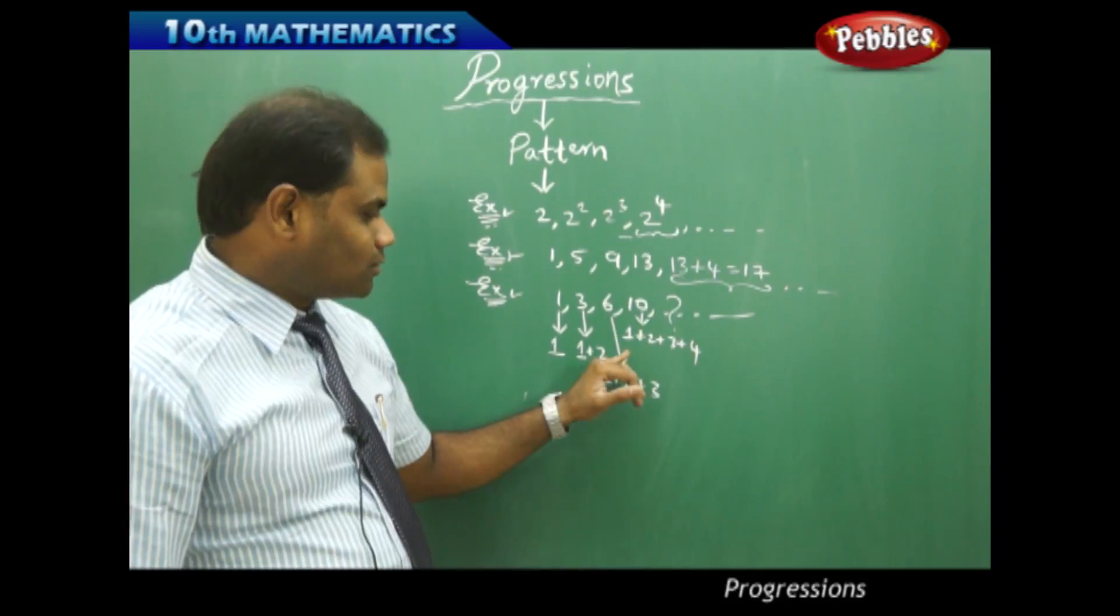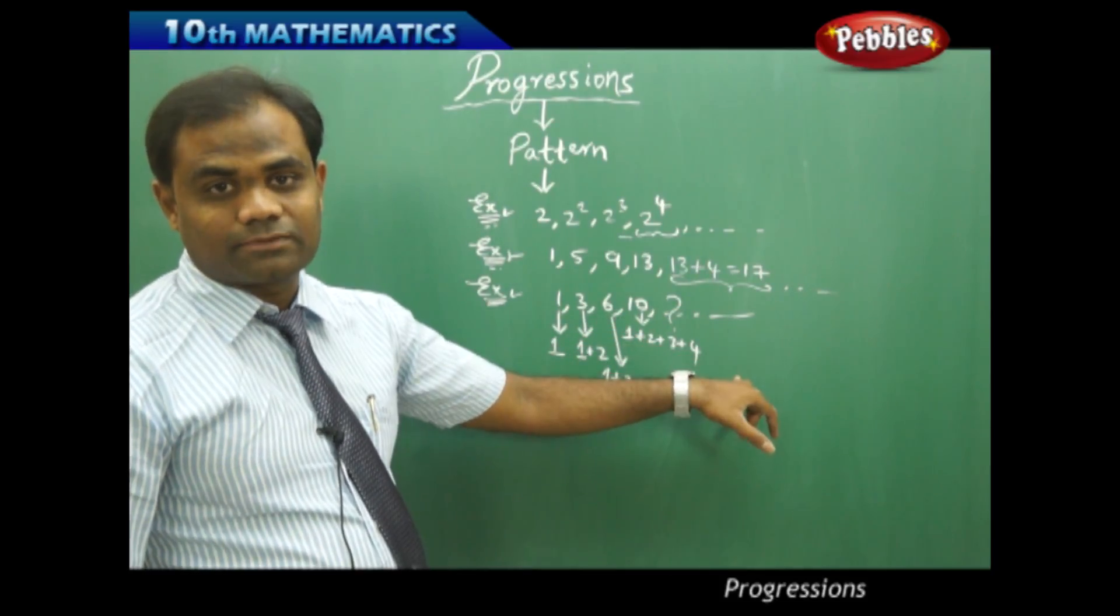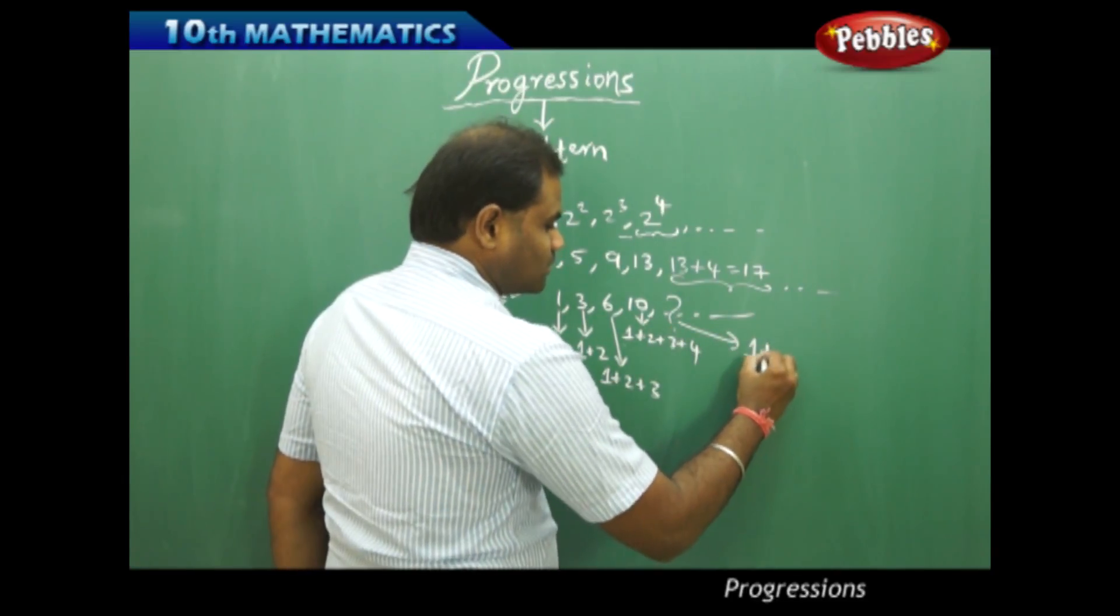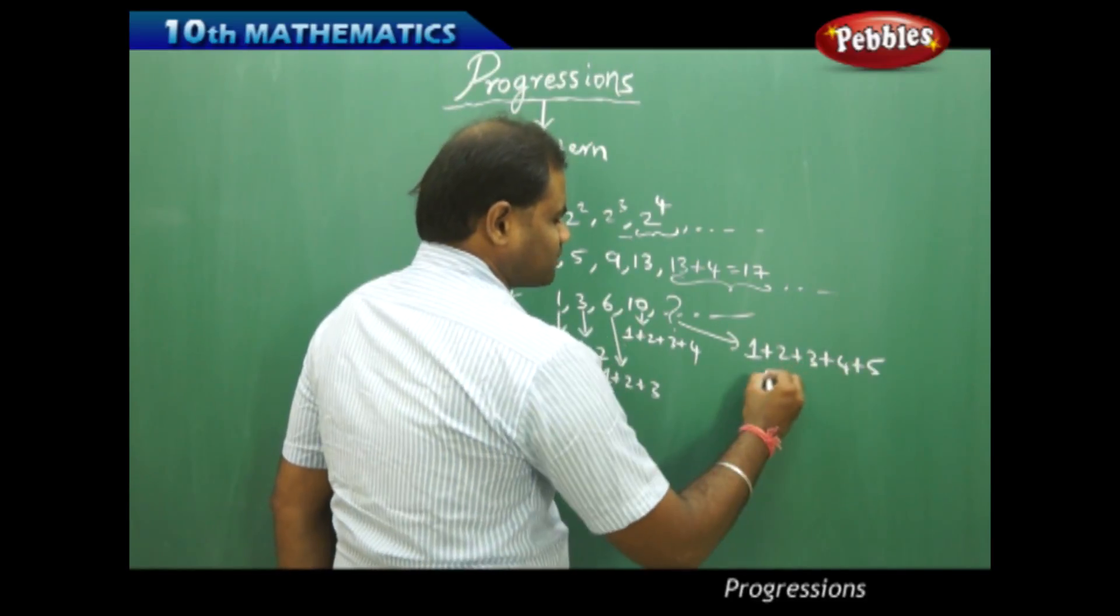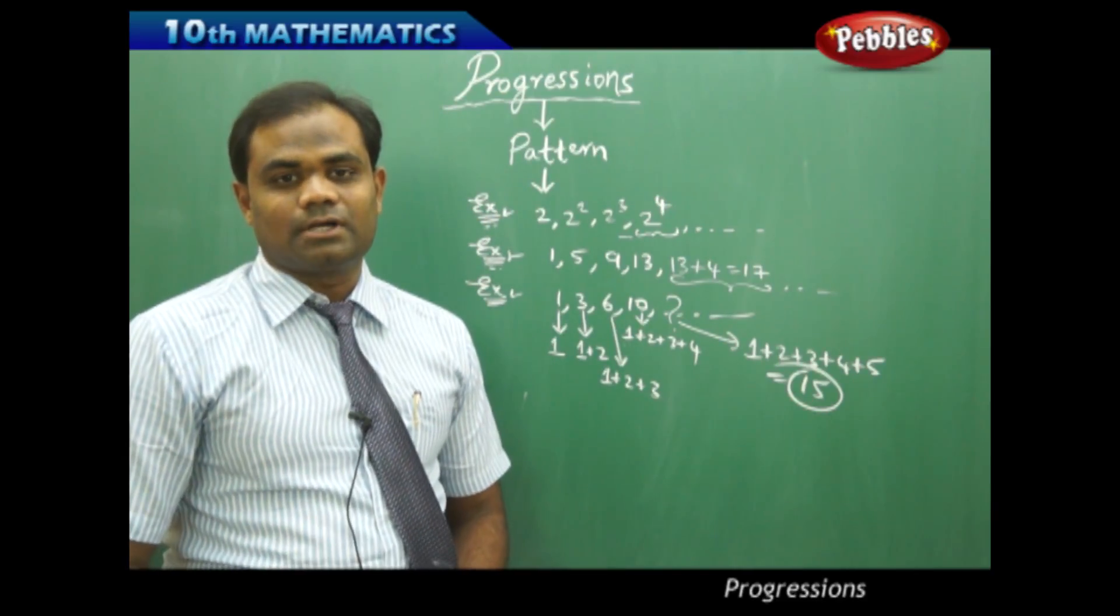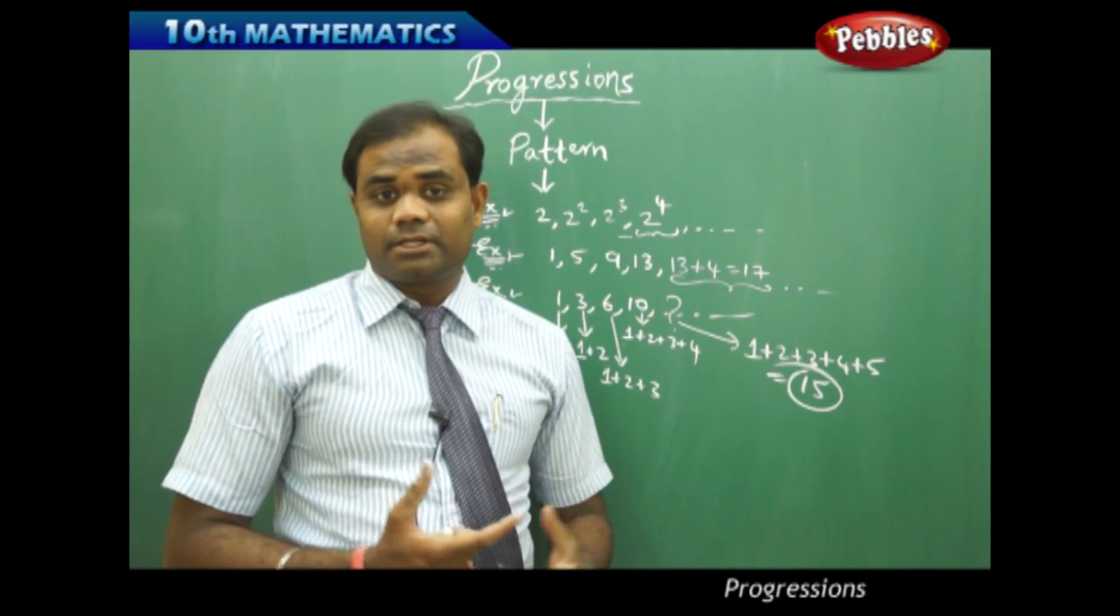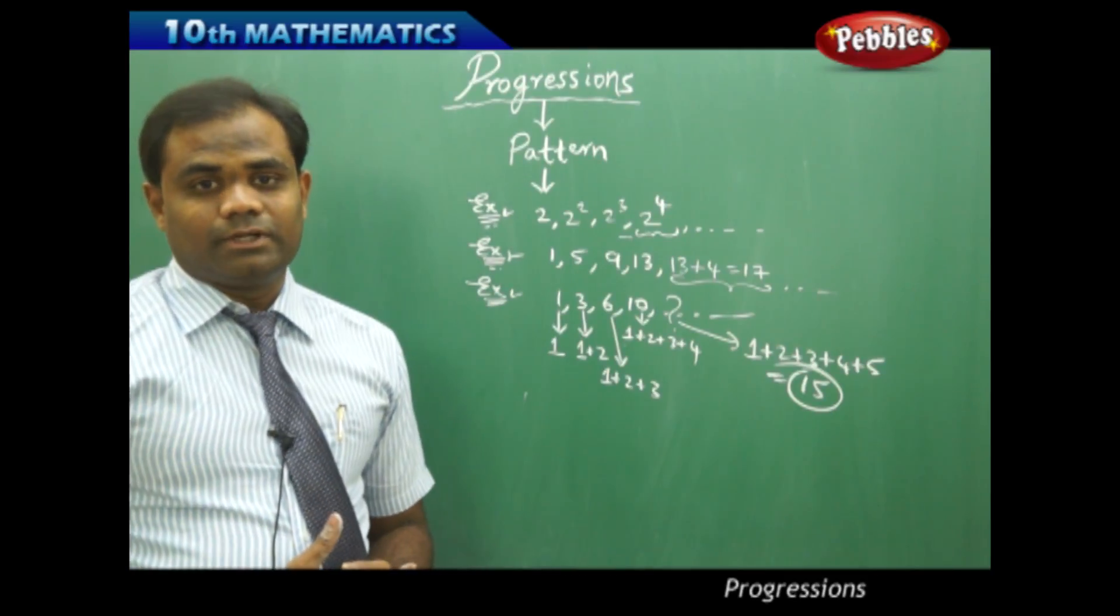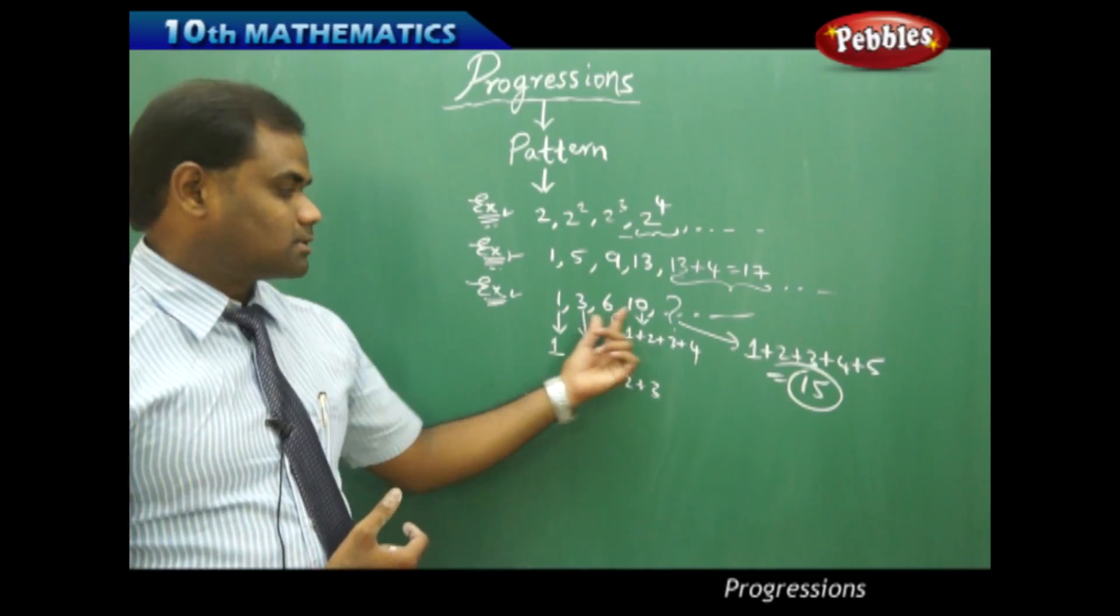Therefore my next term is set to follow the similar pattern with 1 plus 2 plus 3 plus 4 plus 5. So therefore my next term which has to be found will be 1 plus 2 plus 3 plus 4 plus 5 which gives me 15. So 15 is the next term of the pattern is how we identify. So there might be various forms in mathematics or the mathematical properties through which patterns exist. It is very important to identify the exact pattern which the mathematical terms follow.